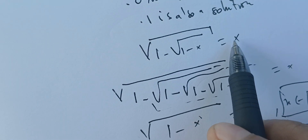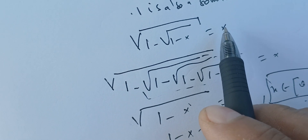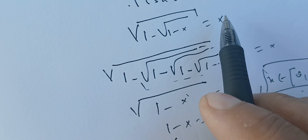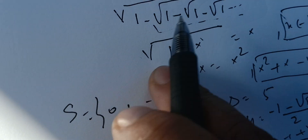So the set of solutions is {0, 1, (−1 + √5)/2}. Are these the only three solutions? Yes, because when we square the original equation we get a polynomial of degree three, and a polynomial of degree three can have at most three roots.